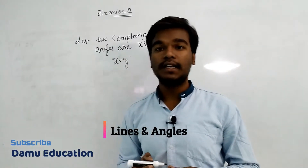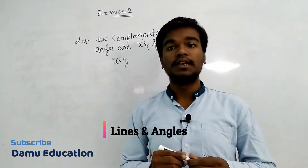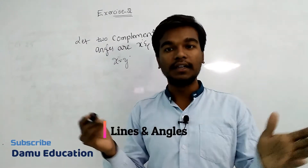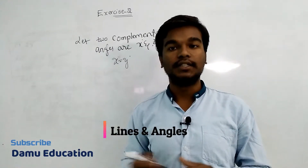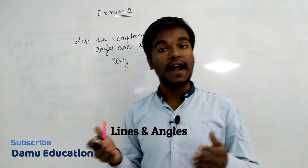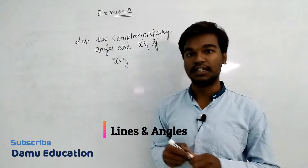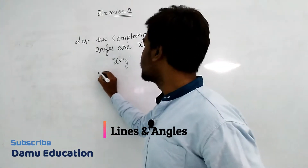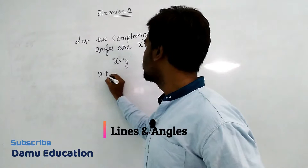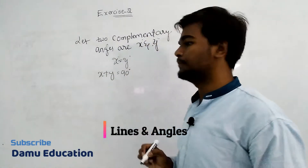What is the condition for complementary angles? The sum of two angles will be equal to 90 degrees. If you add both the angles you will get 90 degrees. So that is: x plus y equals 90 degrees.